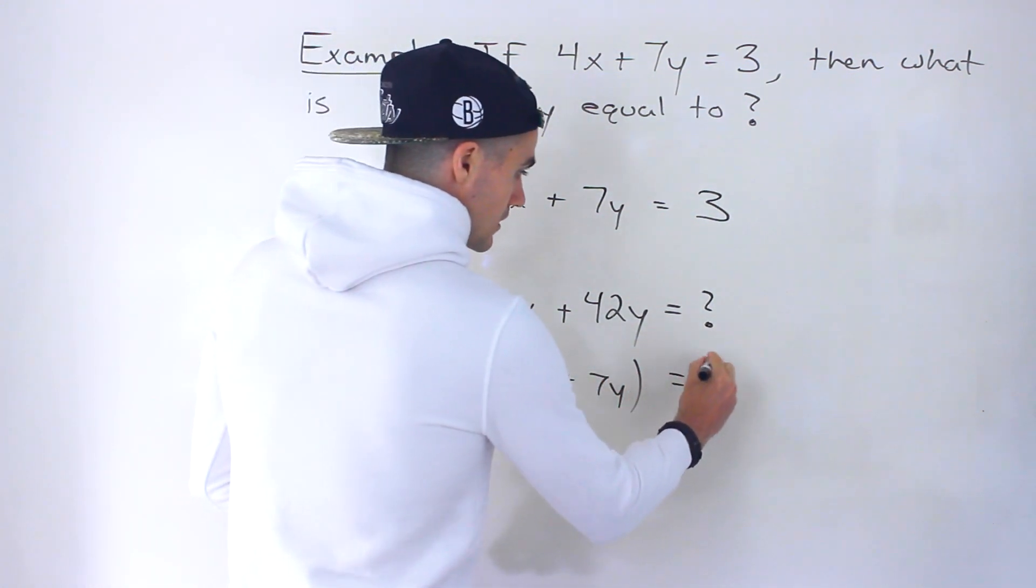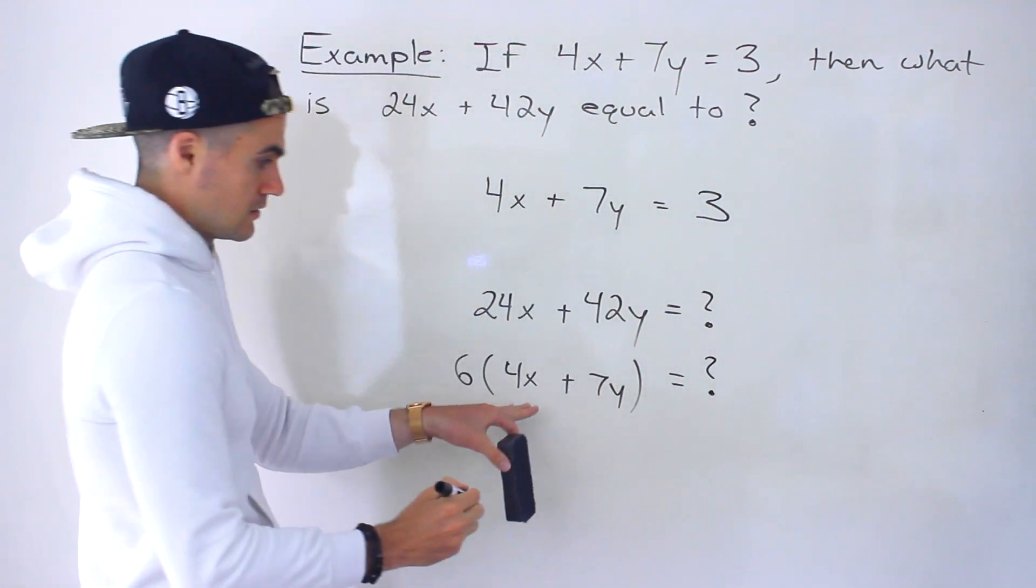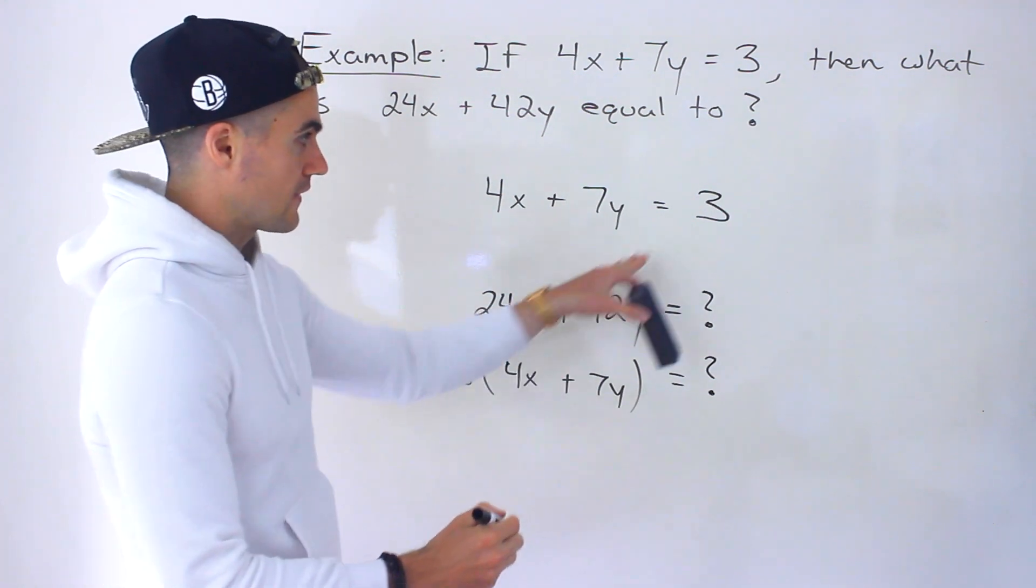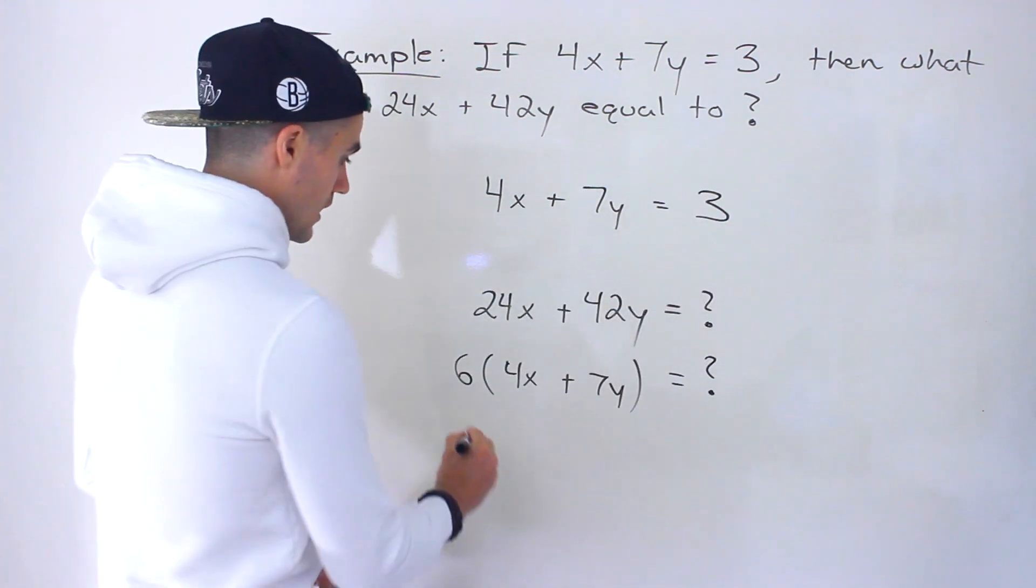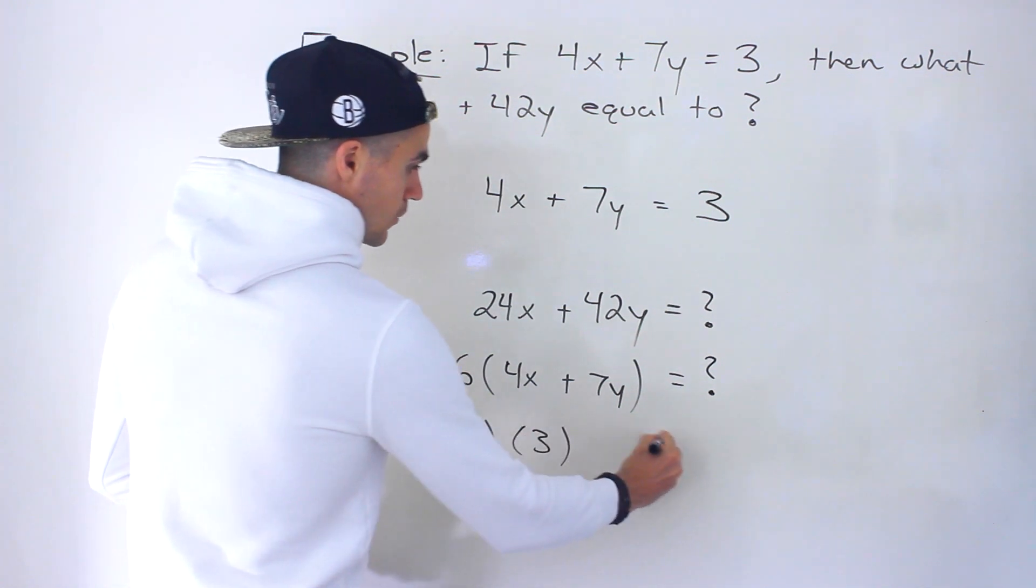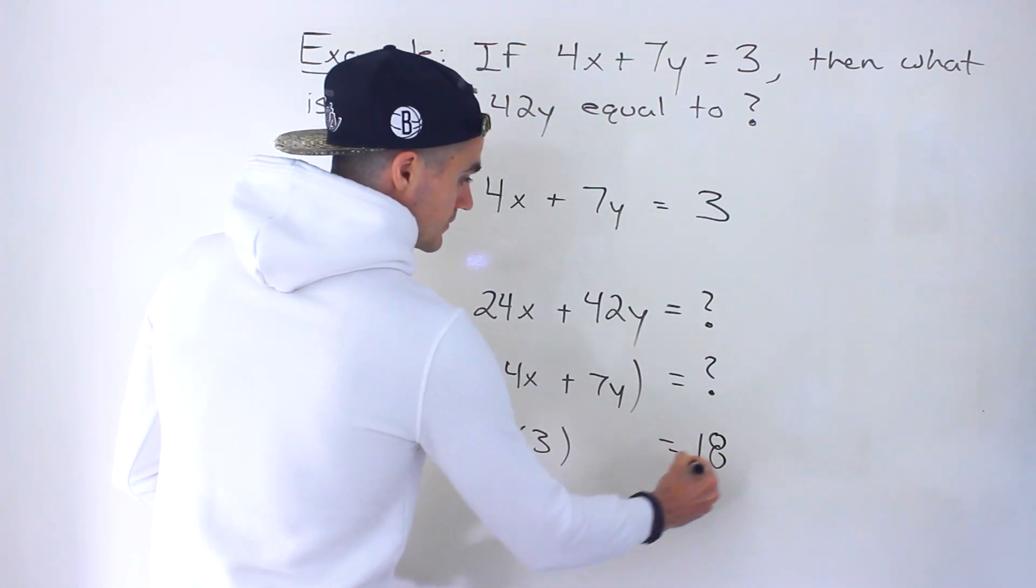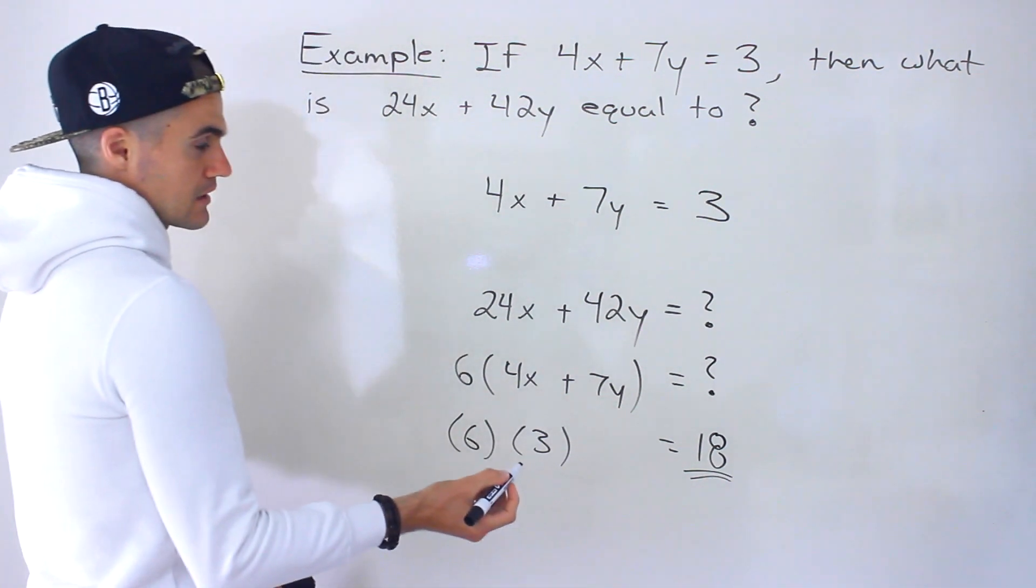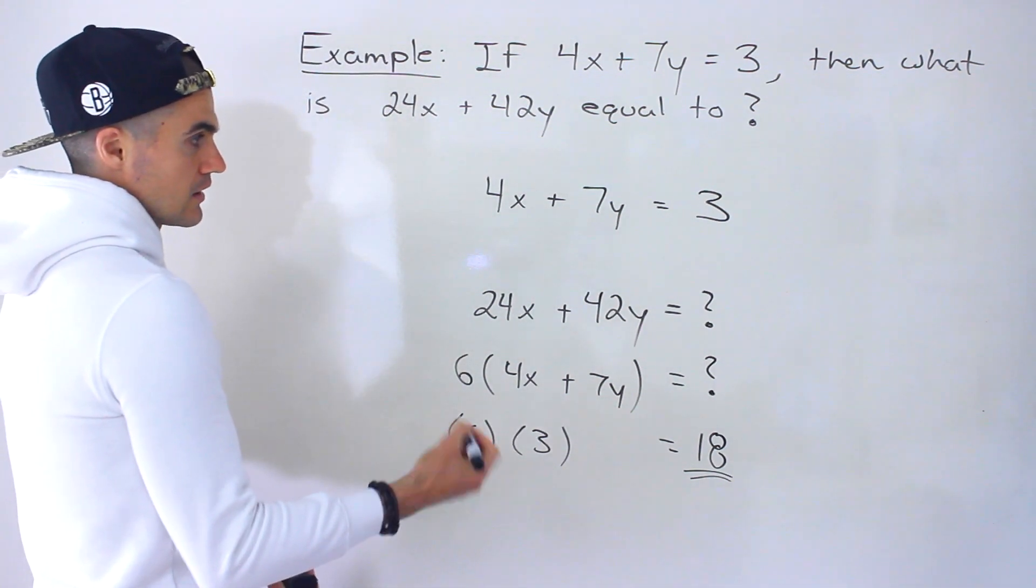Okay, and then notice here what's going to happen. 4x plus 7y, we know that that's equal to 3. And so we would have 6 times 3, which would give us 18. And so that ends up being the answer right there.